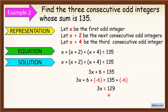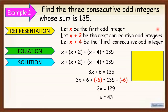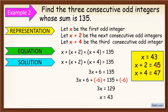Apply MPE — divide both sides by 3 to isolate x. We get x is equal to 43. Since we have x equals 43, x plus 2 equals 45 and x plus 4 equals 47. Substitute the value of x into the representation to find the 3 consecutive odd integers. The three numbers are 43, 45, and 47. If you sum them up, the answer is 135, and they are consecutive odd numbers.